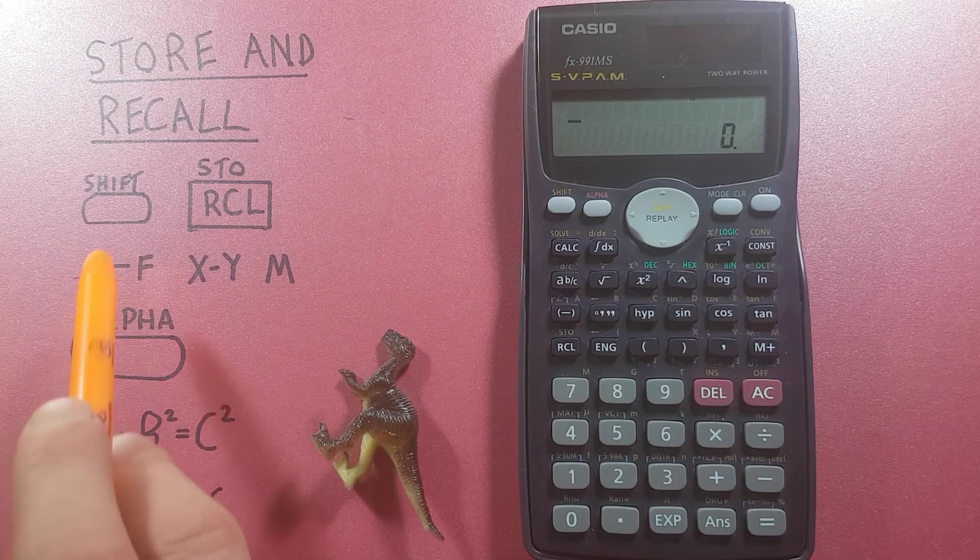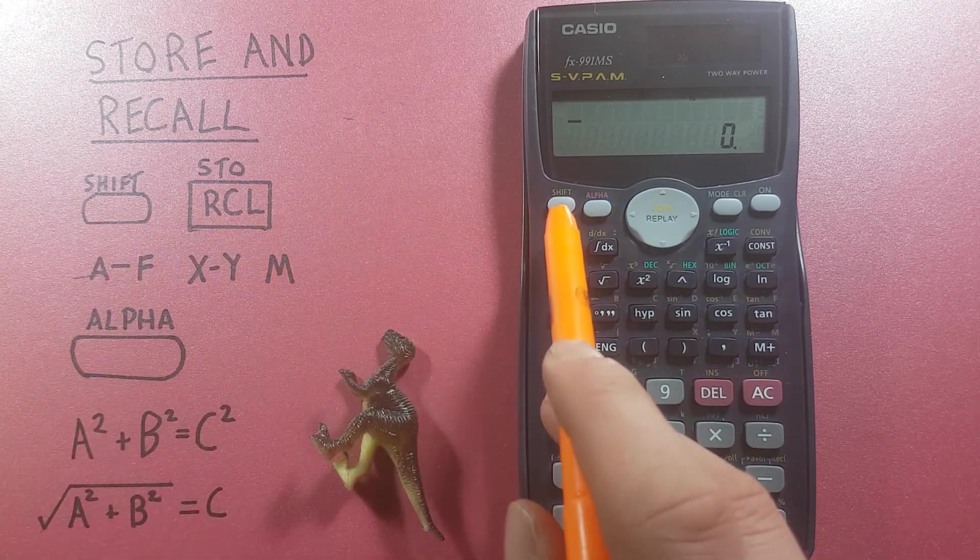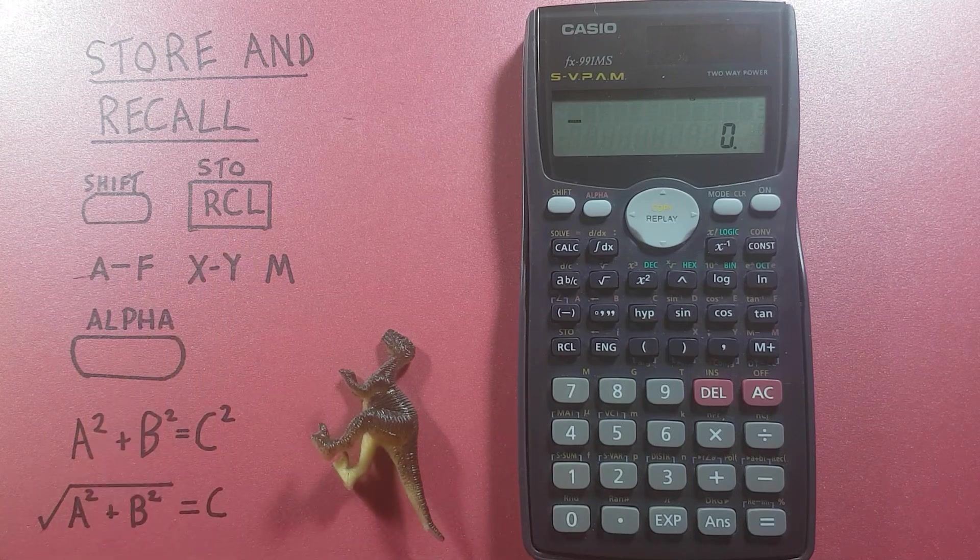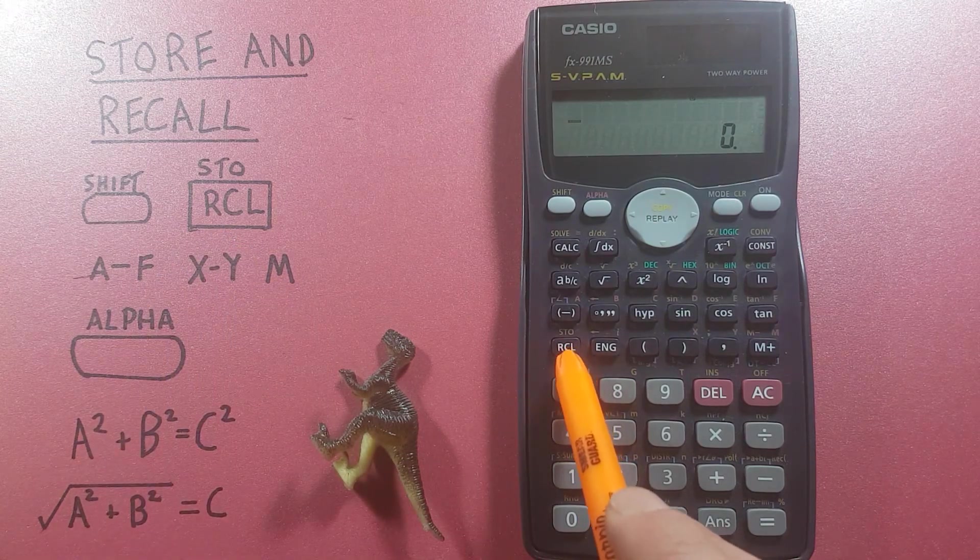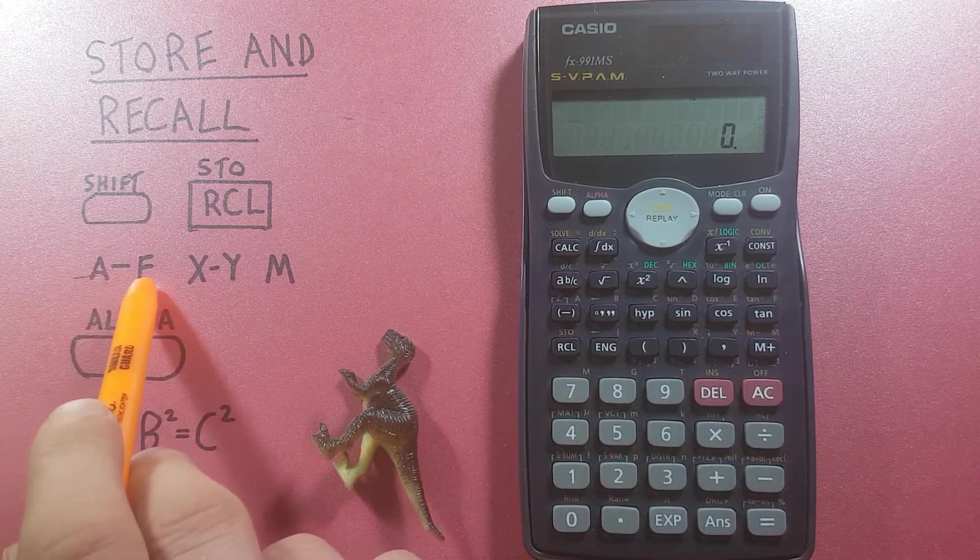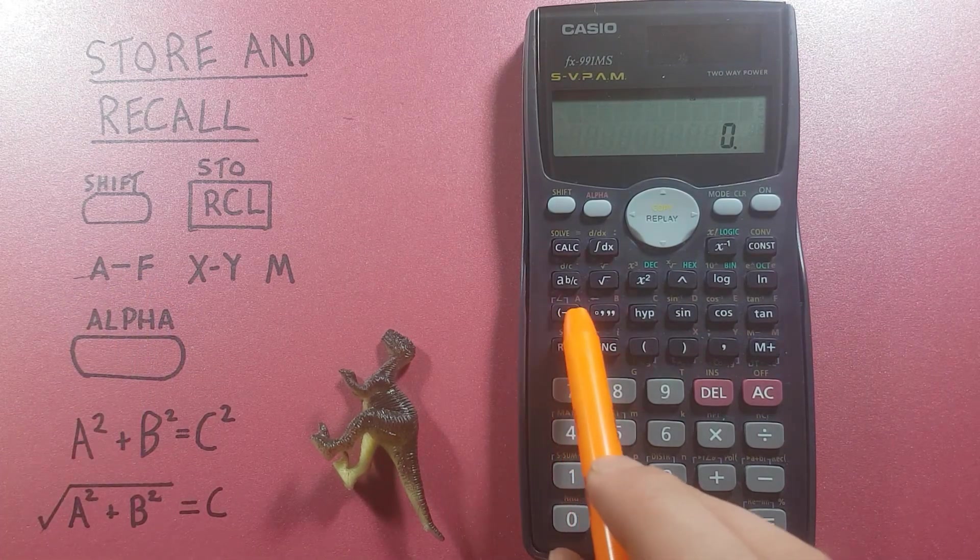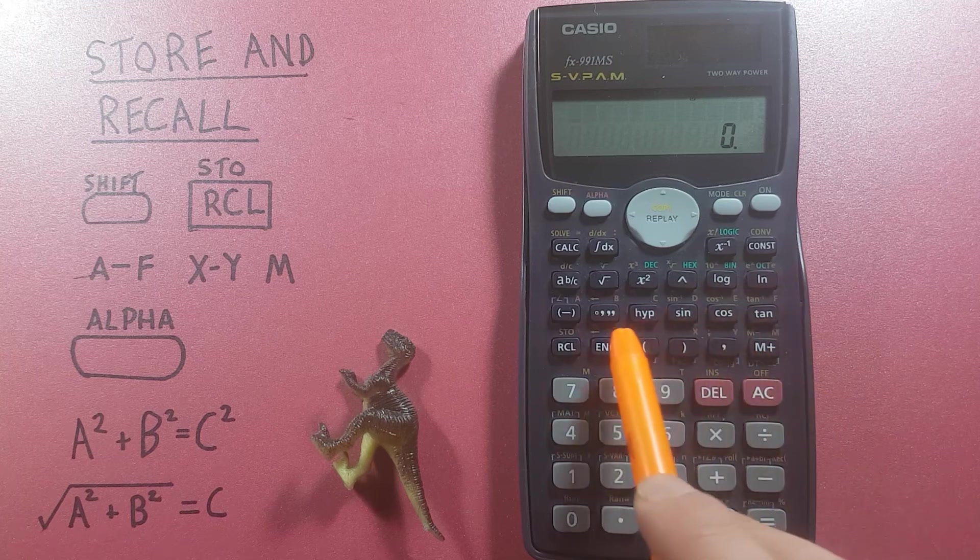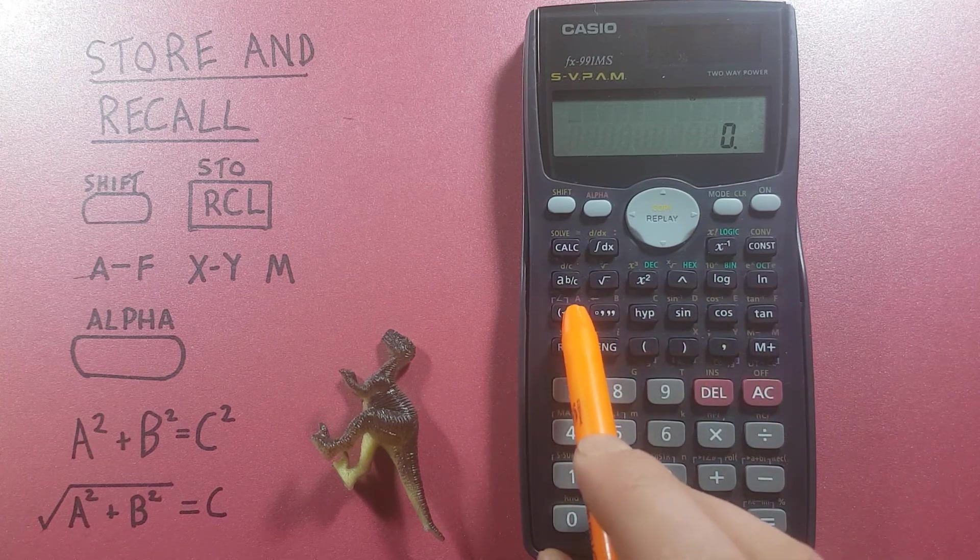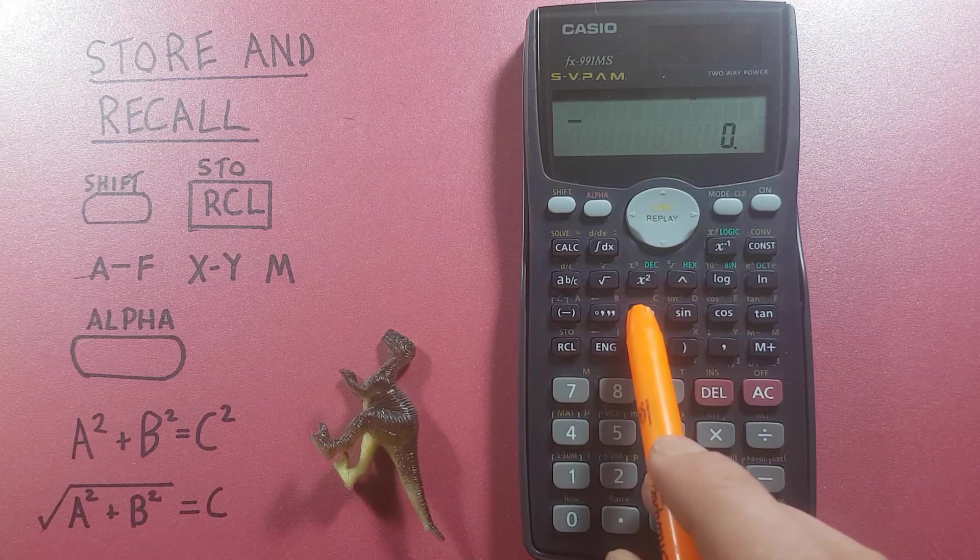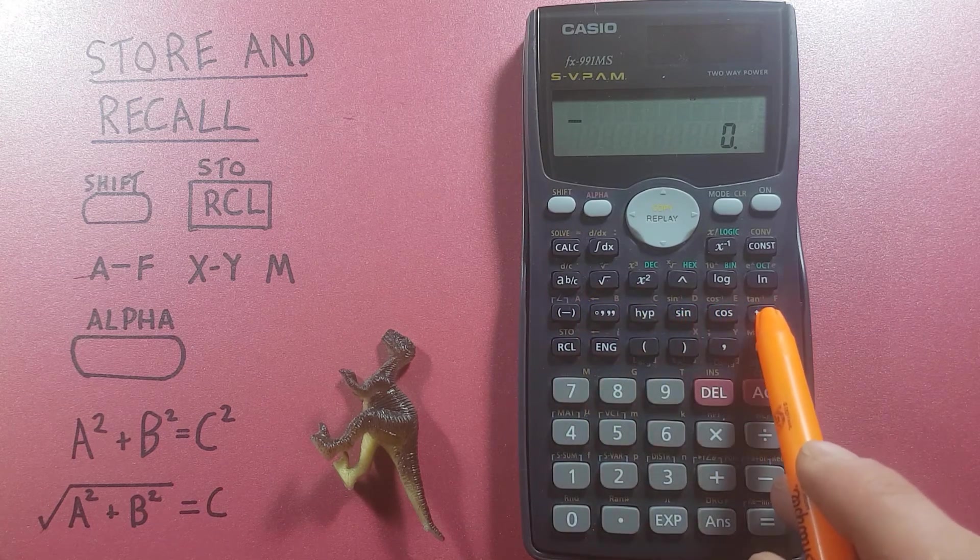To do this we'll be using the shift key located here in the top left, the store recall key located here, the A through F alpha memory save slots located along this row with their letter in the top right hand corner of the key so you can see the A, B, C, D, E and F in red.